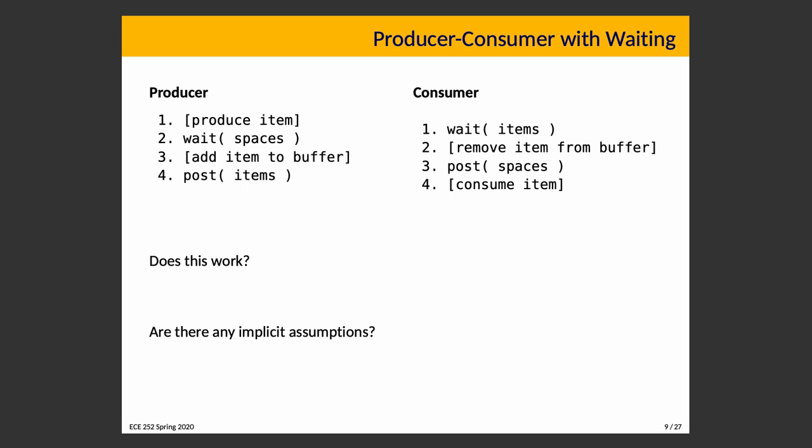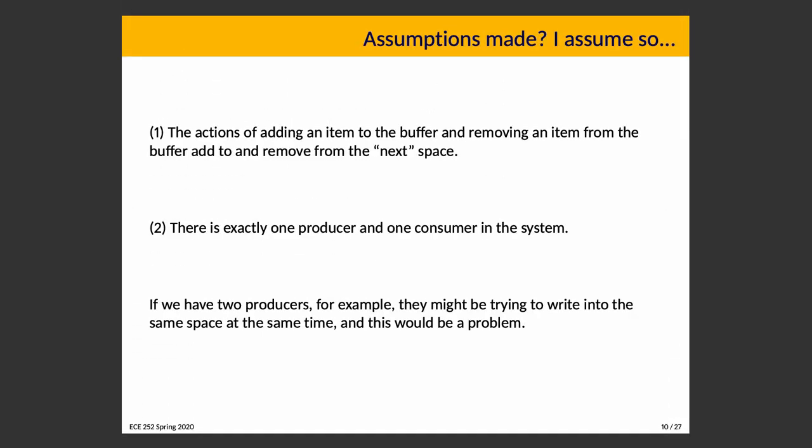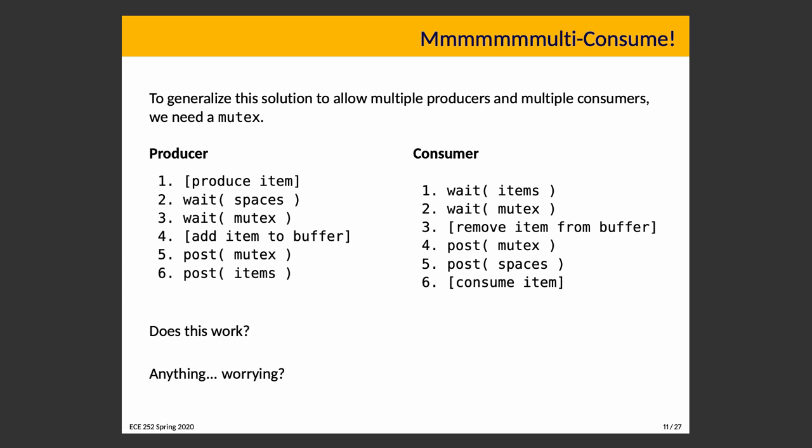Now suppose we want multiple producers and multiple consumers. Then there's the possibility that two producers are thinking about the same location, so we should prevent that. The producer produces the item, waits for there to be a space, waits on the mutex, adds item to buffer, posts on mutex, then posts on items. The consumer waits for there to be items, waits on mutex, removes item from buffer, posts on mutex, posts on spaces, and consumes the item.